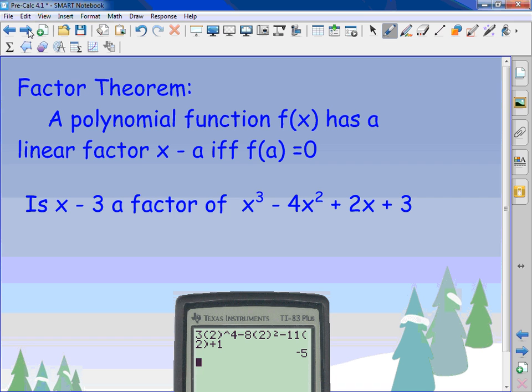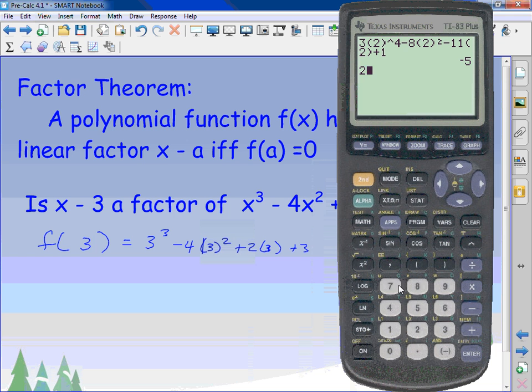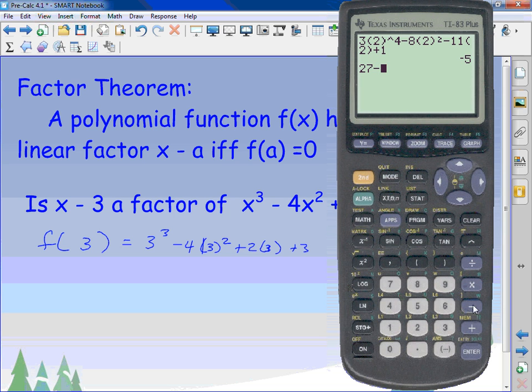So I want you to find, is this a factor? Using the last formula. It's going to be f of what? f of three. Because it's always x minus a. Now I just put in three. Three cubed minus four times three squared plus two times three plus three. Let's see. Three cubed is twenty-seven. Three squared is nine. Nine times four is minus thirty-six. Two times three is six. And three is three. It's equal to zero. Since it's equal to zero, it is a factor. I have no remainder.